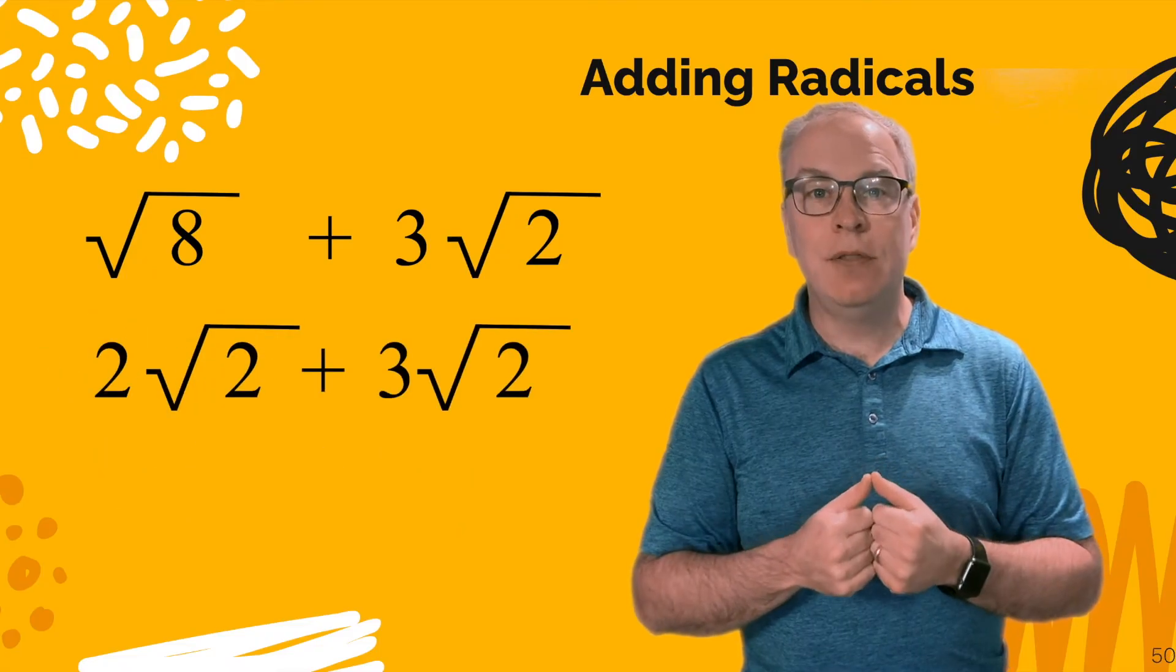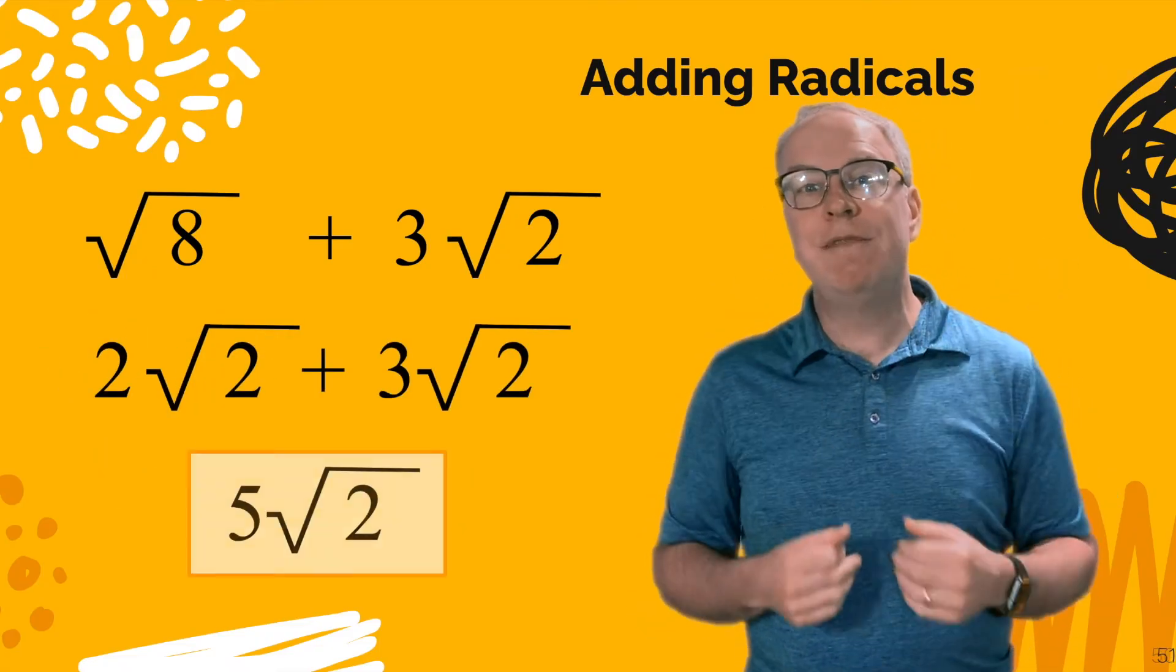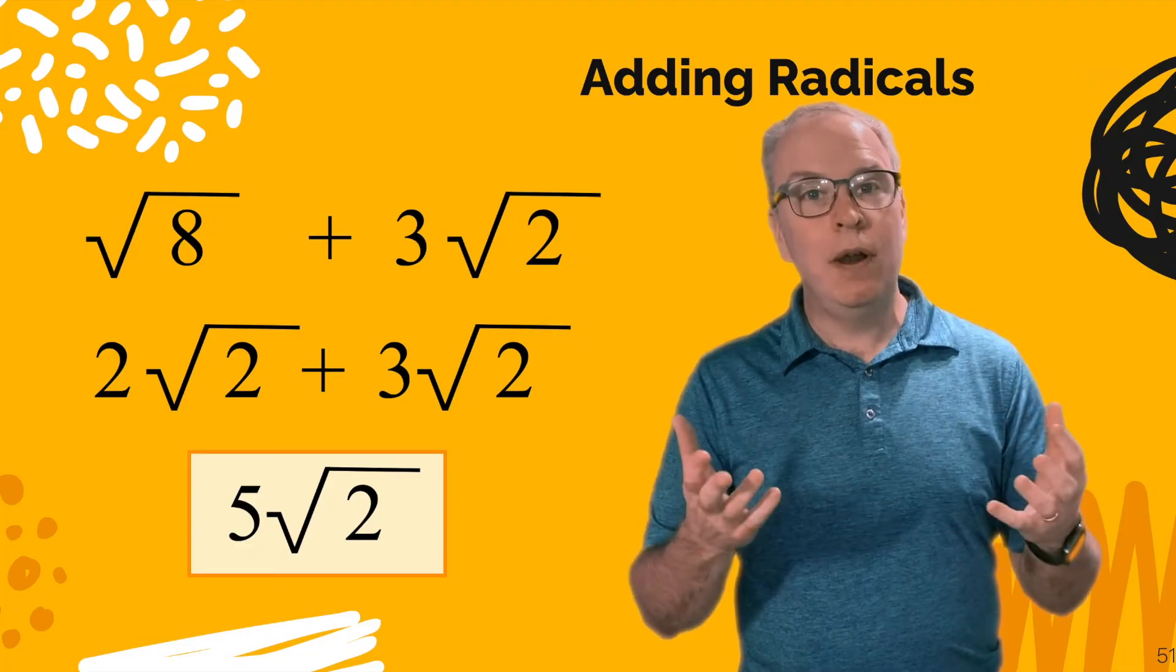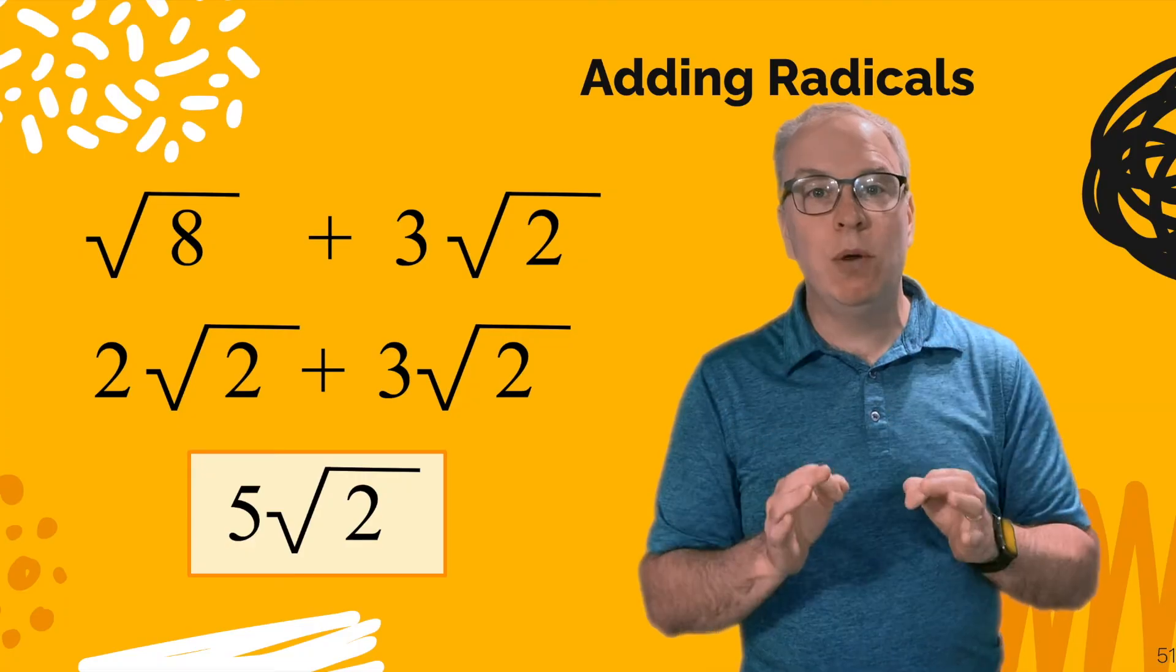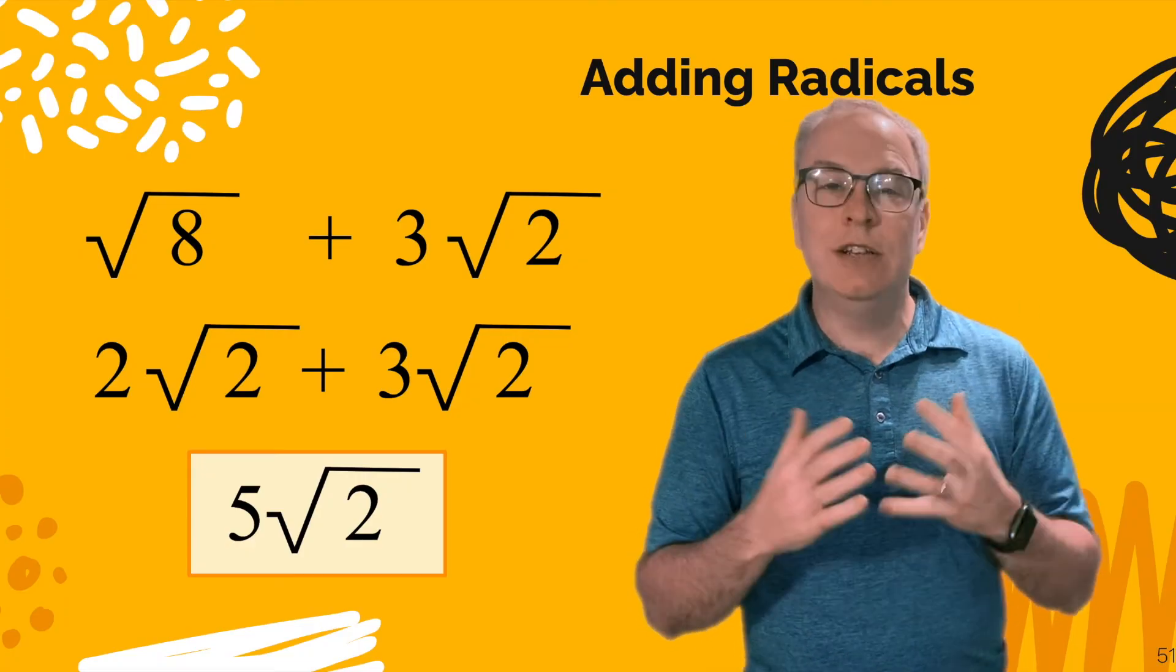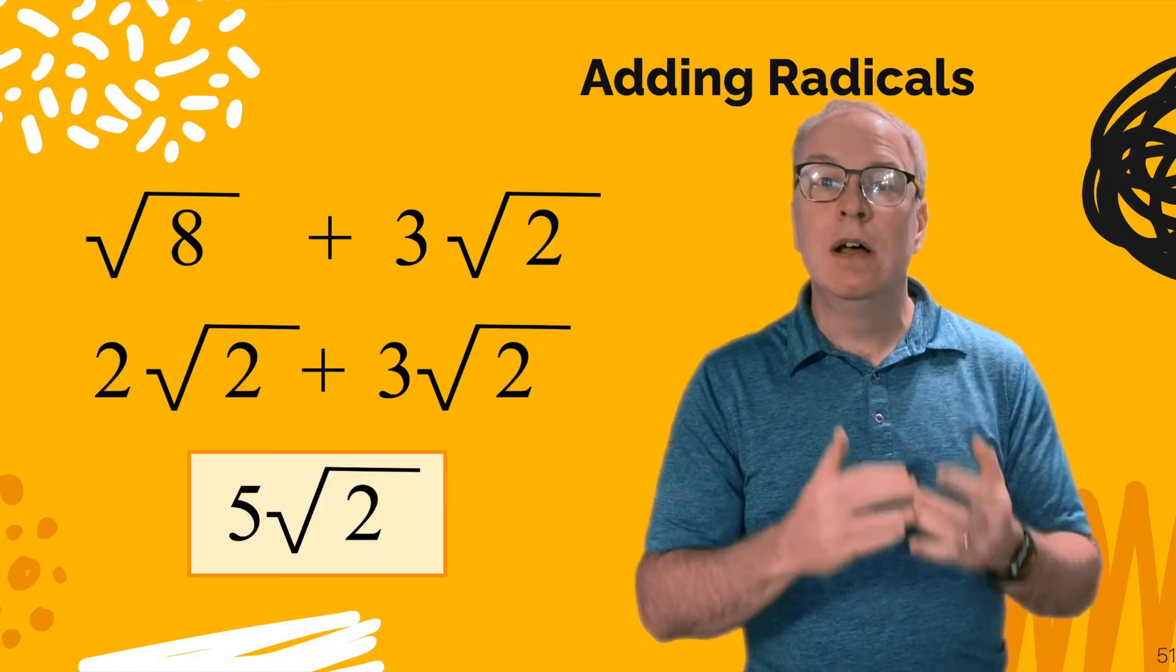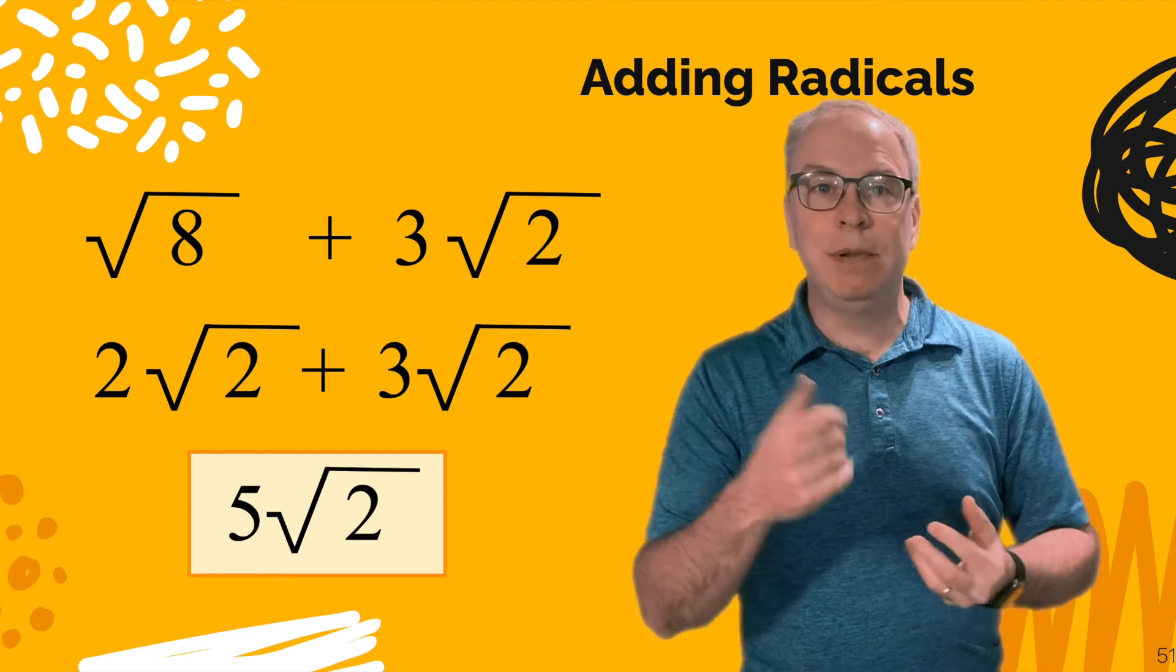Now let's add the radicals together. 2 radical 2 plus 3 radical 2. That makes 5 radical 2. So we were able to combine the two radicals because there was the square root of 2 hiding within the square root of 8. So you need to simplify first, get everything fully simplified, look for like terms, and then add and subtract them. It's as simple as that.